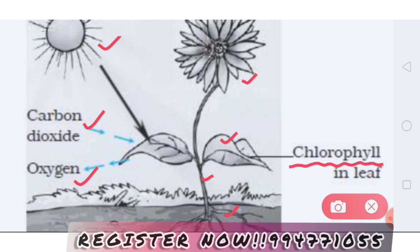Chlorophyll is the green pigment found in plant leaves. Chlorophyll is the thing that traps the sunlight, and it breaks down carbon dioxide and water to give your food and oxygen.